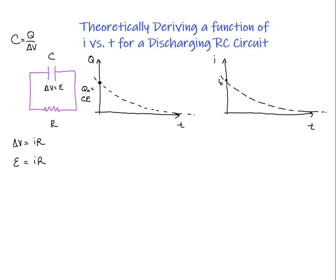I can write it in this way, so i could be written as EMF over R. So I know that this initial value is the same thing as EMF over R. Just some kind of overview of where we've got to to this point.